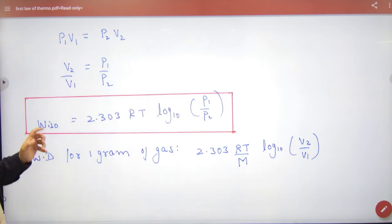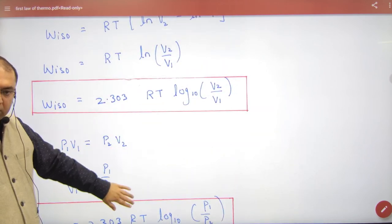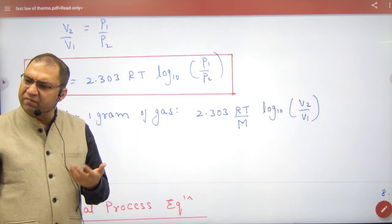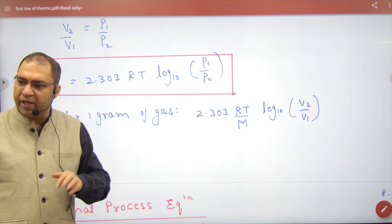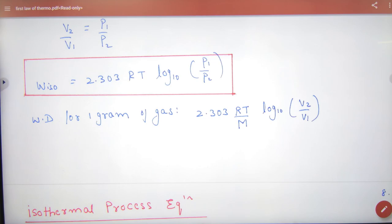So this is work done in isothermal process one mole. If you want to take one gram, then you can divide it from M to molecular mass and automatically one gram of gas. So one mole is one mole. If there are N moles, then we multiply. So the result is clear, work done value is how to get in isothermal process.